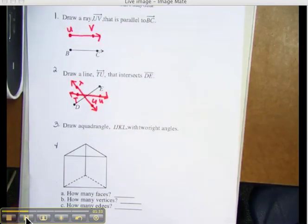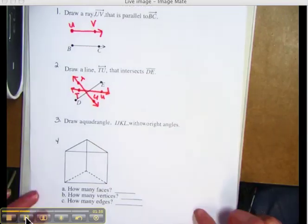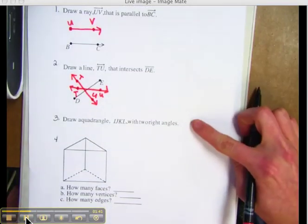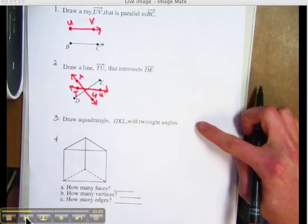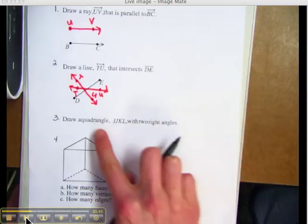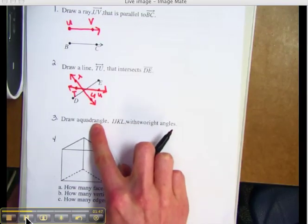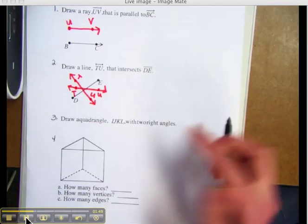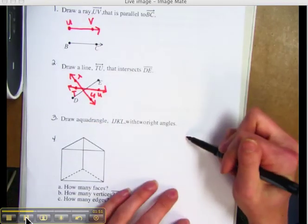Number 3, draw a quadrangle IJKL with two right angles. I remember that a quadrangle has four sides. So I'm going to draw my four sided figure.